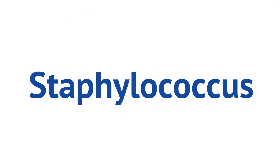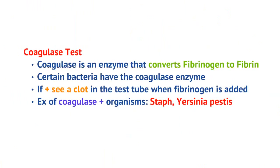Now let's talk about staphylococcus. Staphylococcus can be further differentiated down using the coagulase test. Coagulase is an enzyme that converts fibrinogen to fibrin, and certain bacteria have this coagulase enzyme. So if you put fibrinogen into a test tube with bacteria that has coagulase, you'll see a clot form. That's called a coagulase-positive test. Examples include staphylococcus and Yersinia pestis.